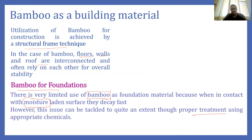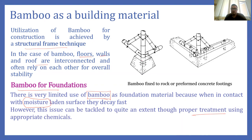Sometimes we can use bamboo construction compositely — we can embed the bamboo in concrete blocks. For example, the foundation is constructed in concrete and within the concrete we can embed the bamboo, and then we can start our bamboo construction. That is also a way to use bamboo in the foundation.